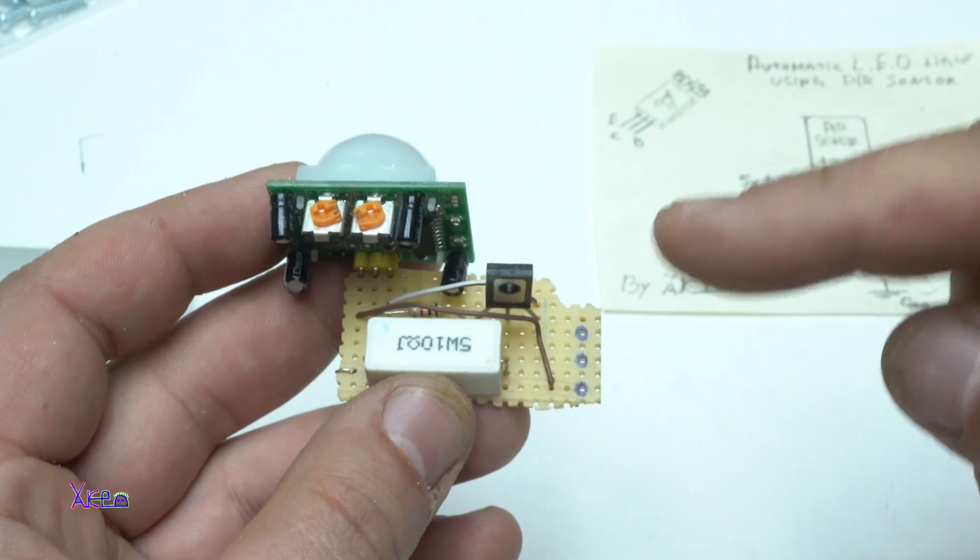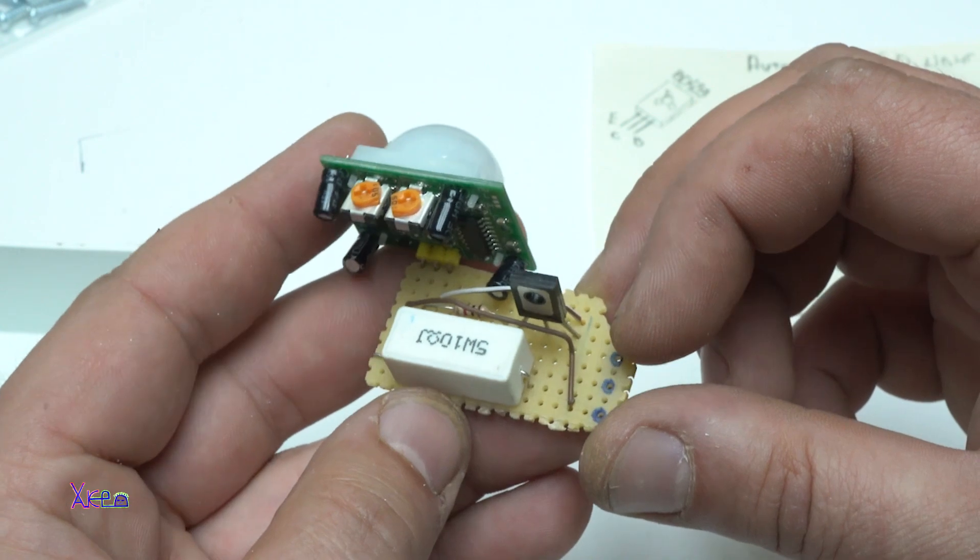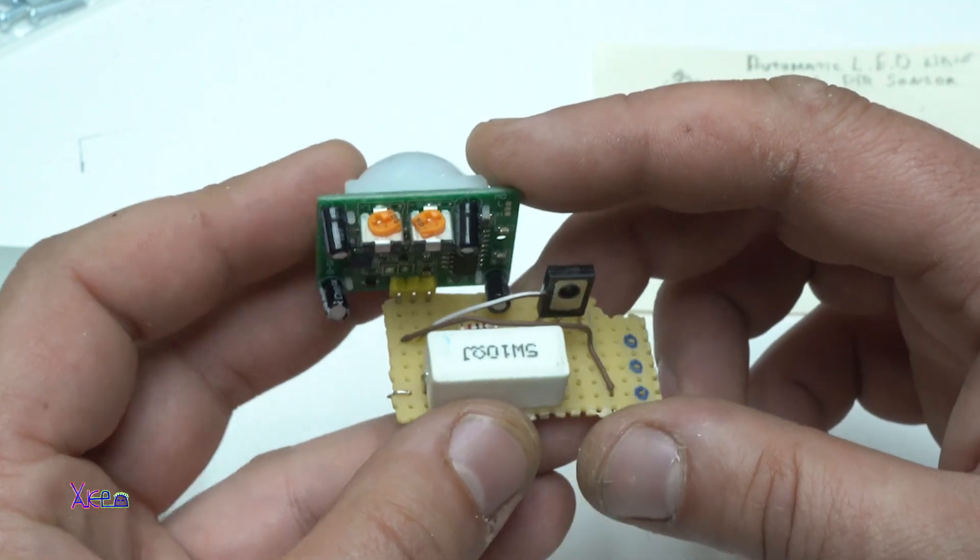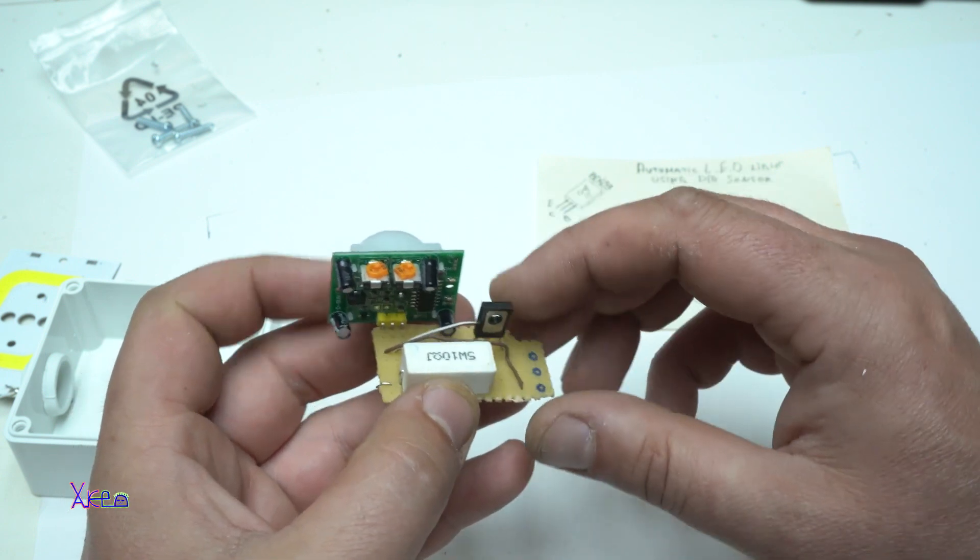I placed and soldered all electronic components on the universal breadboard, including the PIR sensor. One kilo ohm resistor going from out to base of the transistor.